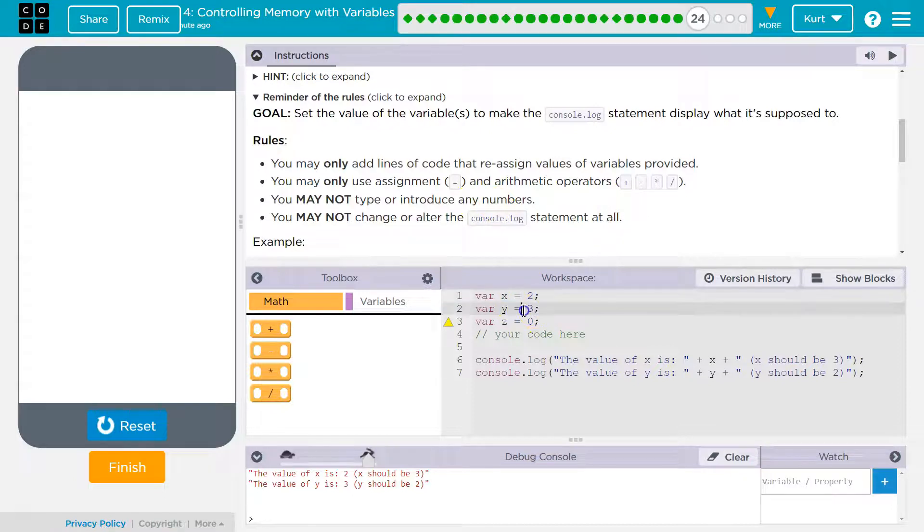You may not type or introduce any numbers. So I can't do like, oh look, Y now equals 50 or 5. That's not allowed. And you may not change your console log. I can't do X equals 3. That's not what we're doing.